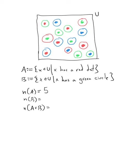B is the set with a green circle. How many have a green circle? That's going to be one, two, three, four, five as well. So there are five elements of our universe that have a green circle.